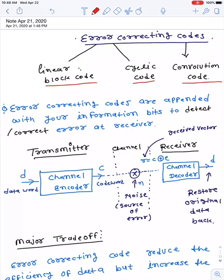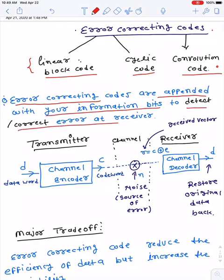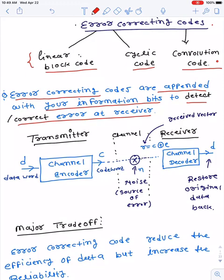Various error correcting codes — like linear block code, cyclic code, and convolution code — are designed to increase the reliability of the system and decrease the bit error rate at the receiver. The first part we are going to learn today is the linear block code. Error correcting codes are appended with information bits to detect and correct errors, but this increases redundancy and lowers code efficiency — there is a trade-off between reliability and code efficiency.